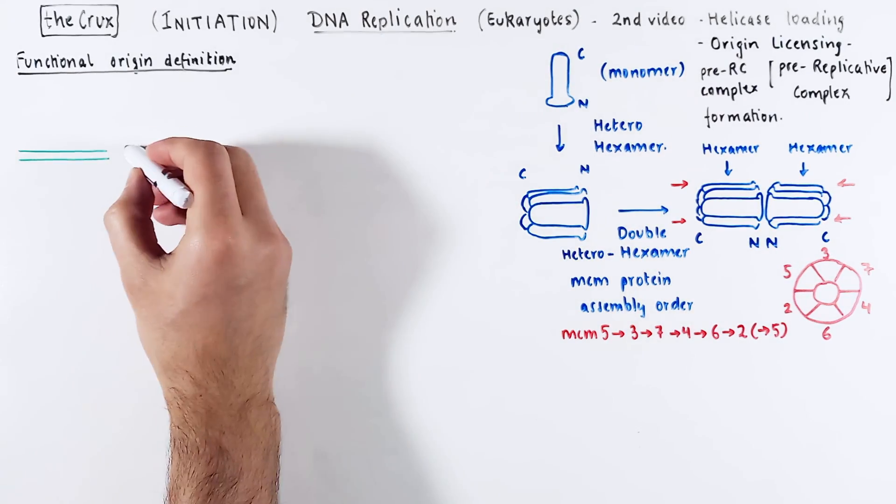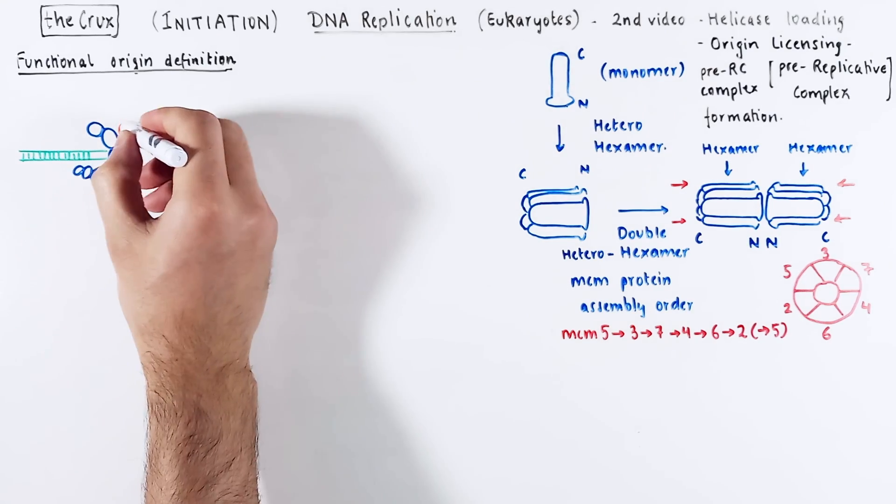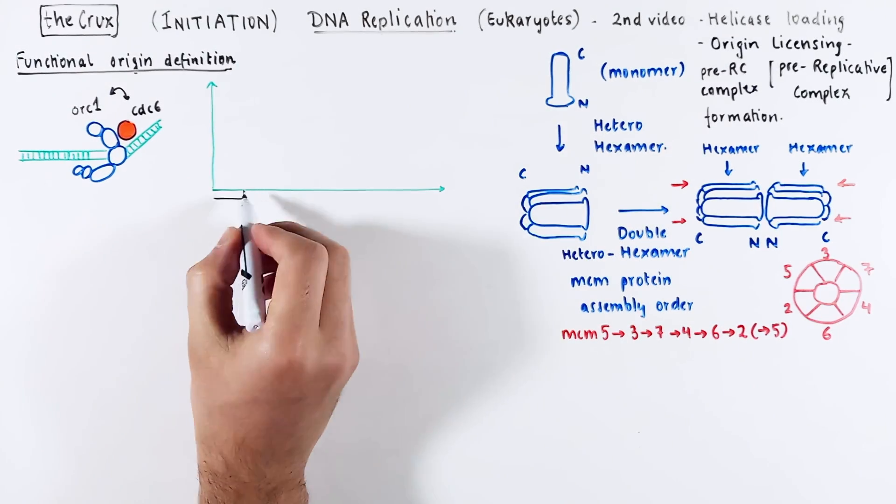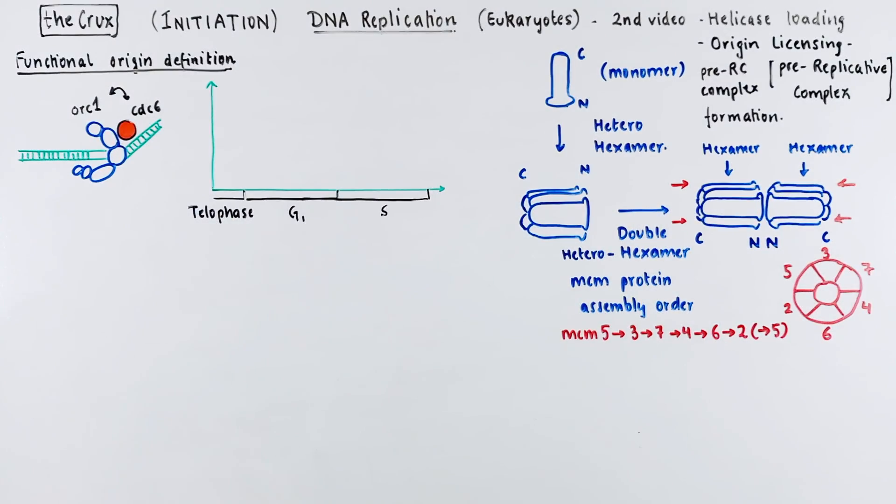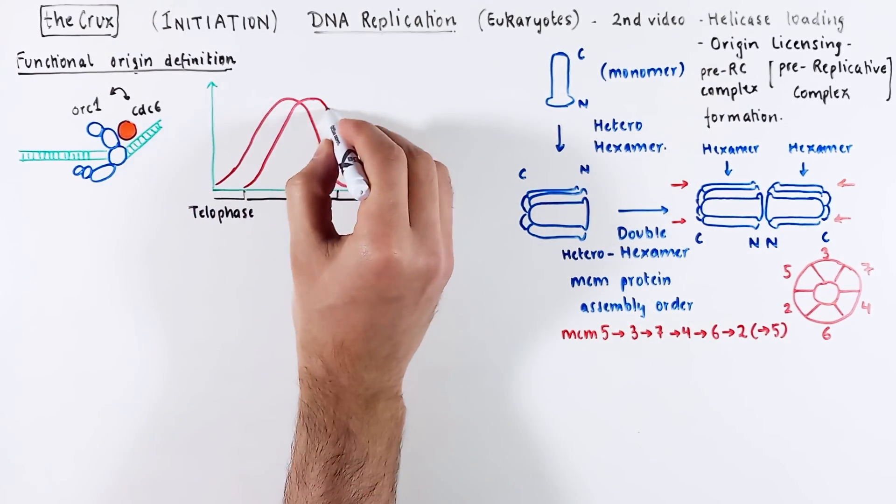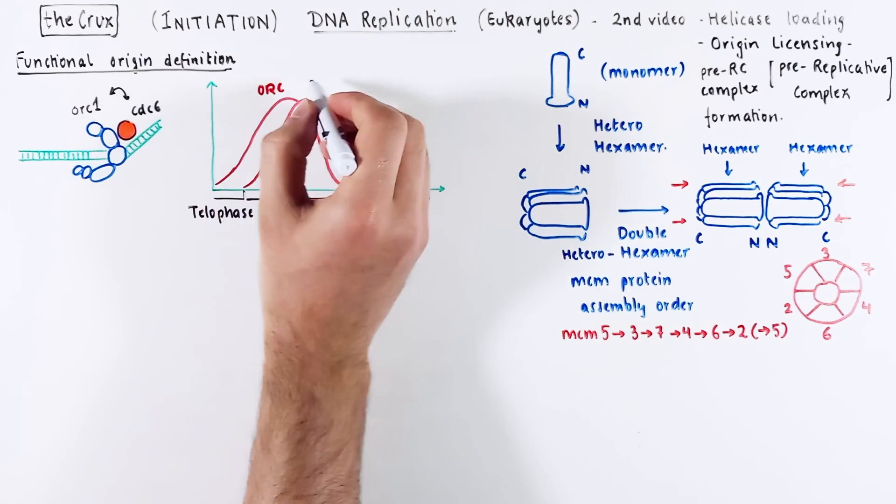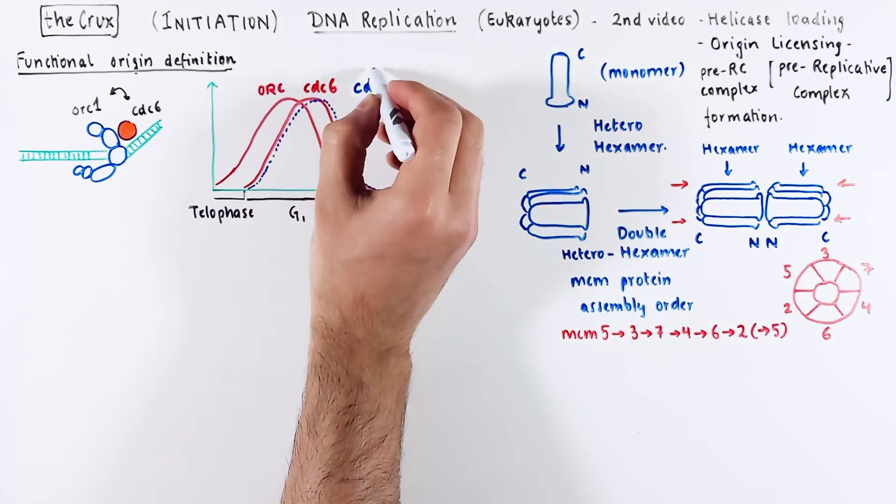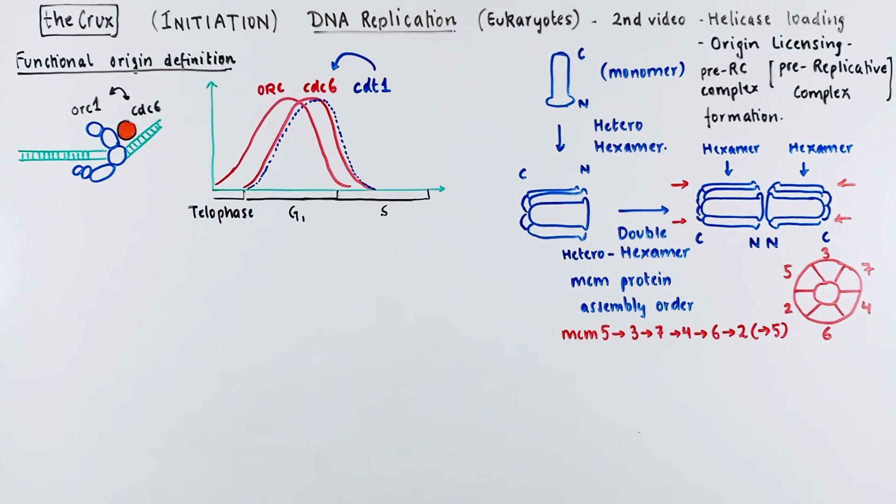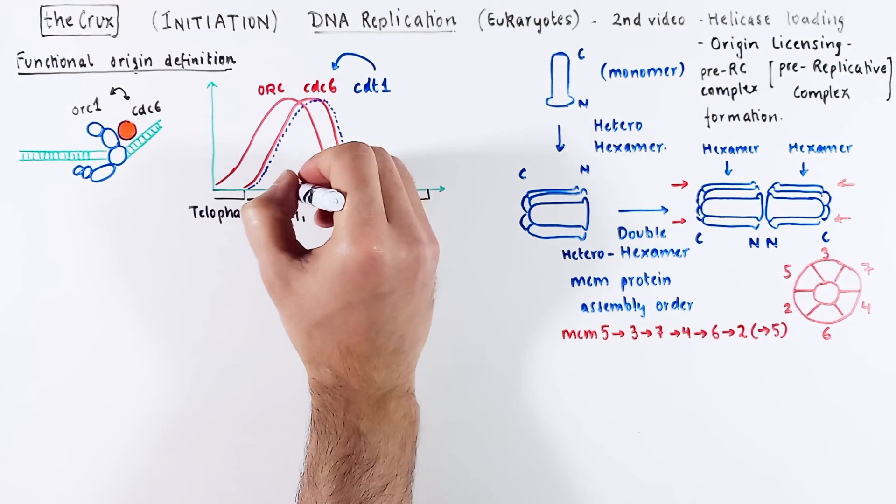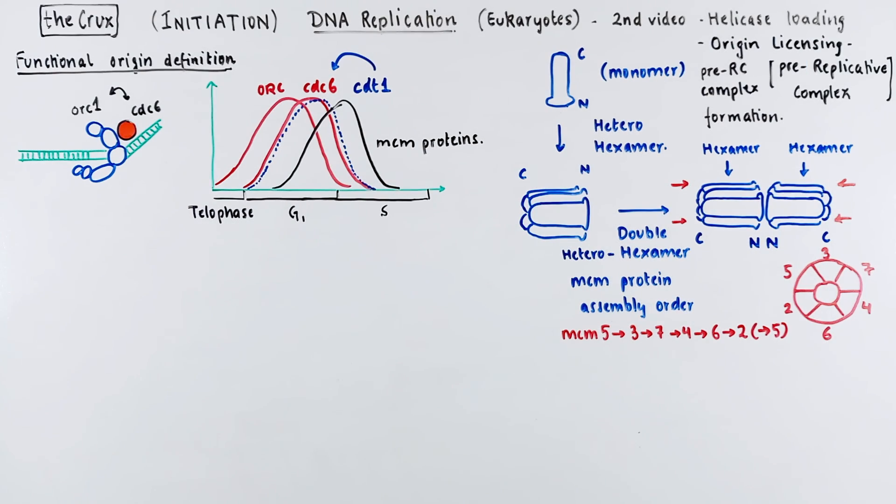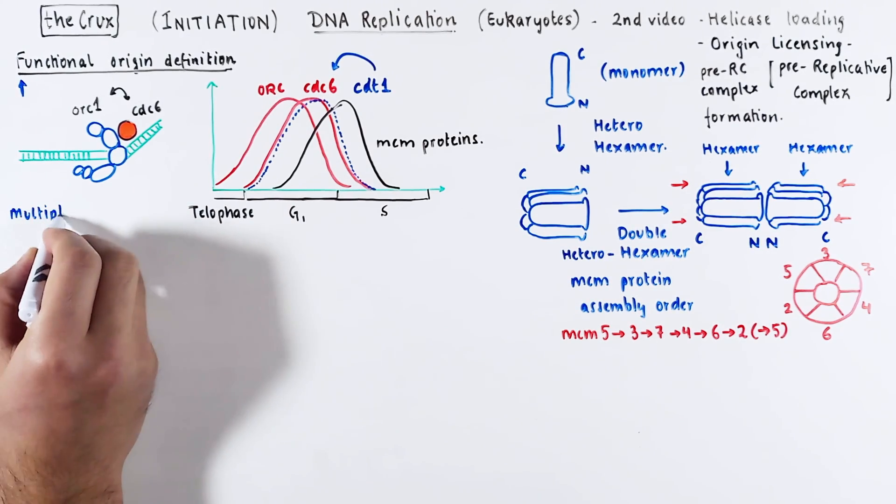We saw how orcs and the CDC-6 come together and define the origin of replication. Before we go into the helicase loading, let's just go over the proteins involved in this as the cells move through the cell cycle. We have seen what happens to orcs and CDC-6. Now, CDT-1, which we will discuss in a moment, follows the expression profile of CDC-6. So, it only stays until the G1 phase or during the G1S transition. Importantly, the MCM proteins start expressing in the late G1 phase and peek around the G1S phase transition.